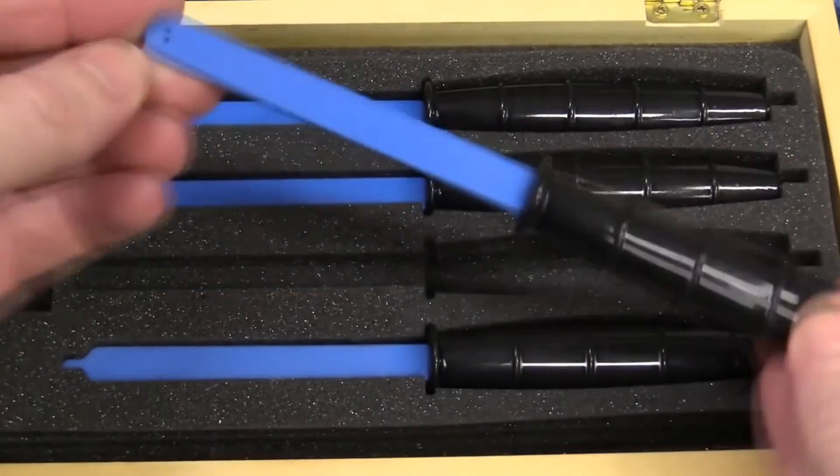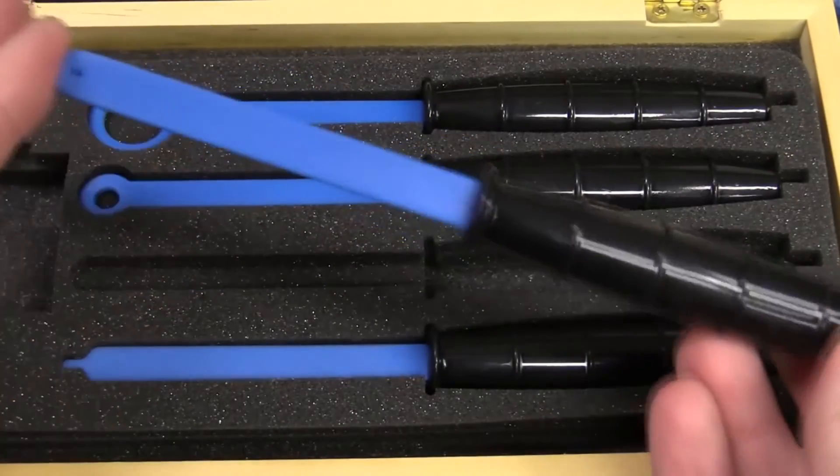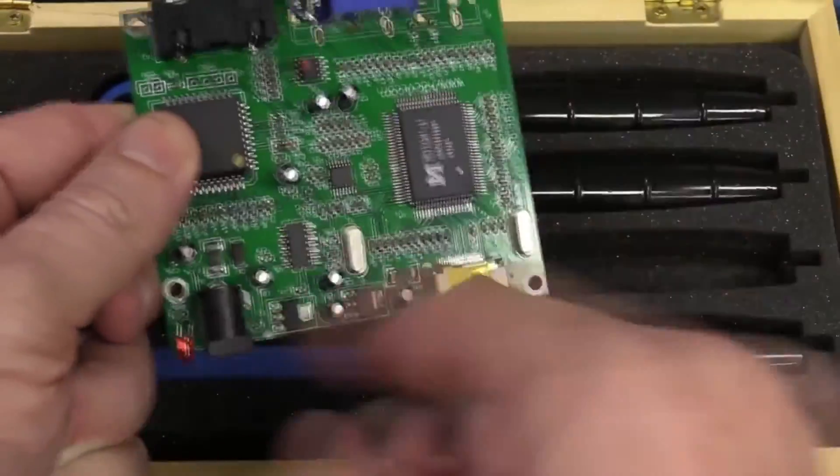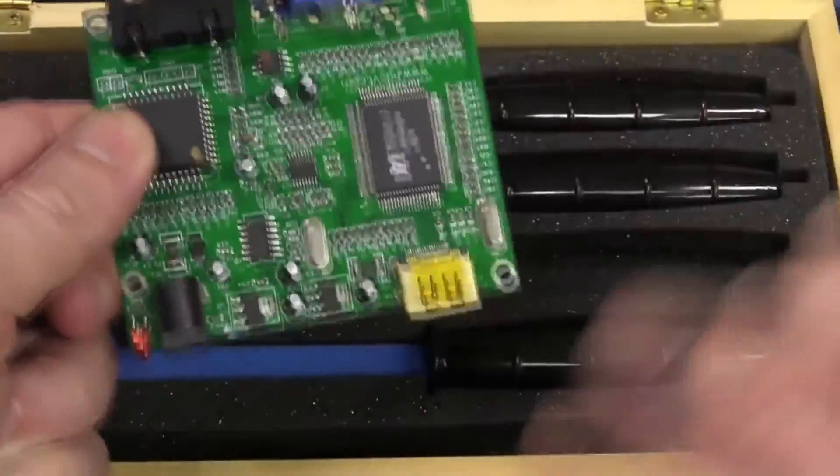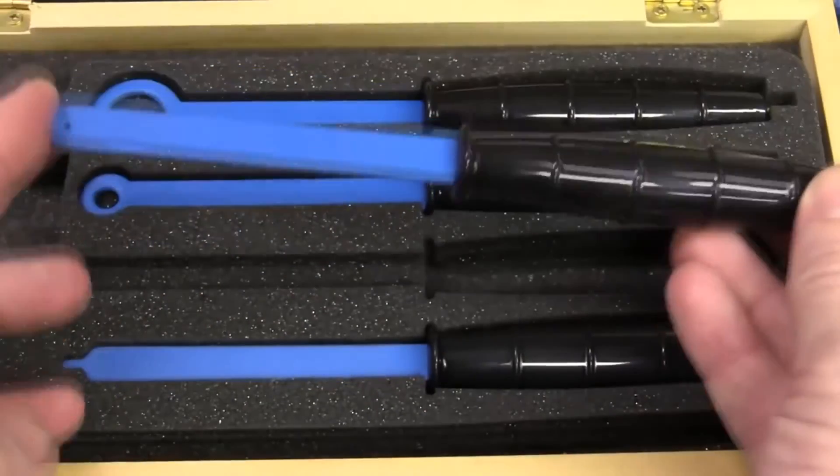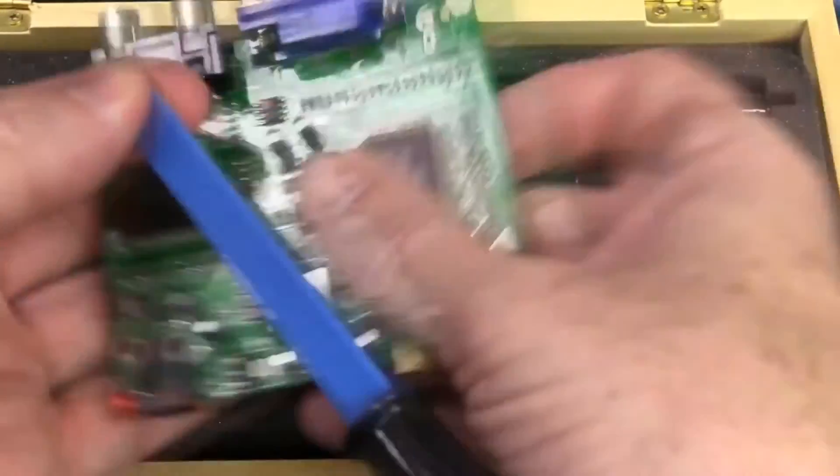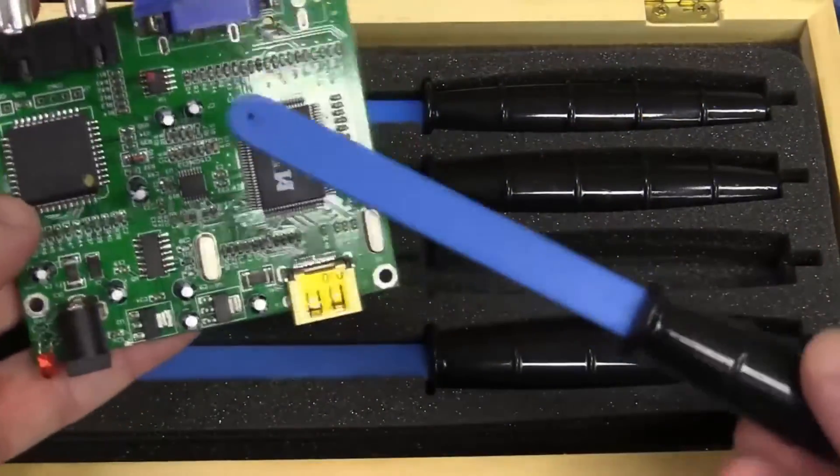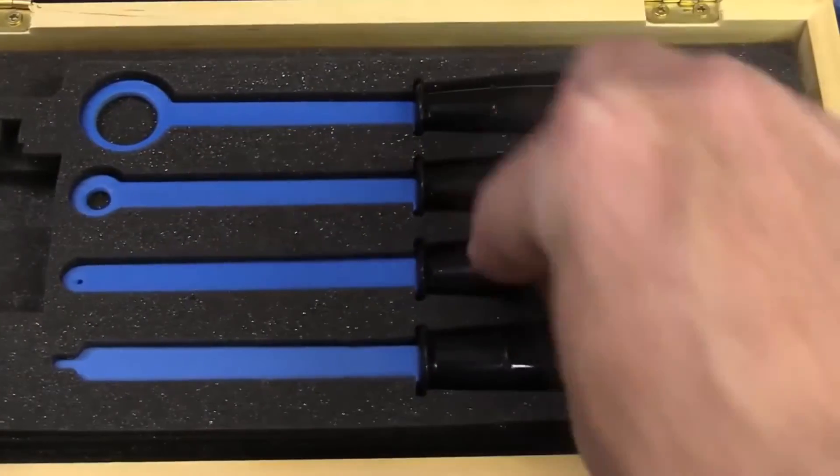But for high-current stuff, which is going to be loop area, big loop area on a PCB, and there's a chip just drawing huge gulps of current or something like that, generating big magnetic fields, then generally, at a specific distance, the H-field, the magnetic field, is going to dominate. So you're going to want to use a magnetic field probe.